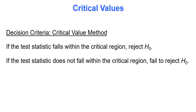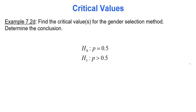Here's the decision criteria for the critical value method: if the test statistic falls within the critical region, we reject the null hypothesis. If the test statistic does not fall within the critical region — the rejection region — we fail to reject the null hypothesis. Let's find the critical values for the gender selection method. Alpha is 0.05, and we always use 0.05 if none is given.